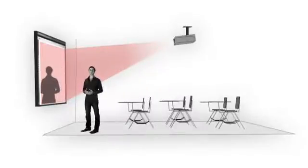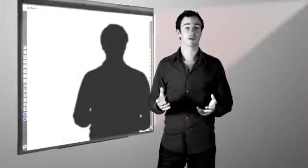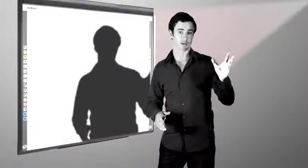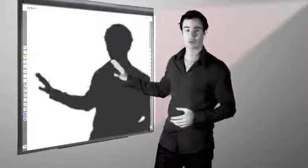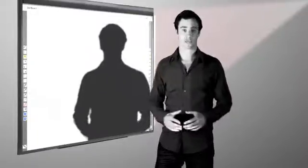This is fine, except when the presenter needs to come up to the screen. As you can see, I'm now directly in the path of the light, and this creates a large shadow over my screen, blocking my presentation.